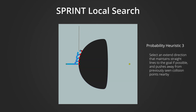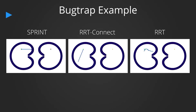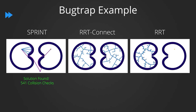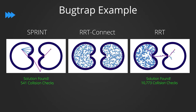This process repeats until the search either decides it is in a local minimum or reaches its goal. Putting the SPRINT global and local searches together in a bug trap problem, we see that the probability heuristic functions in SPRINT work together in order to quickly find a solution with many fewer collision checks than the alternative approaches.